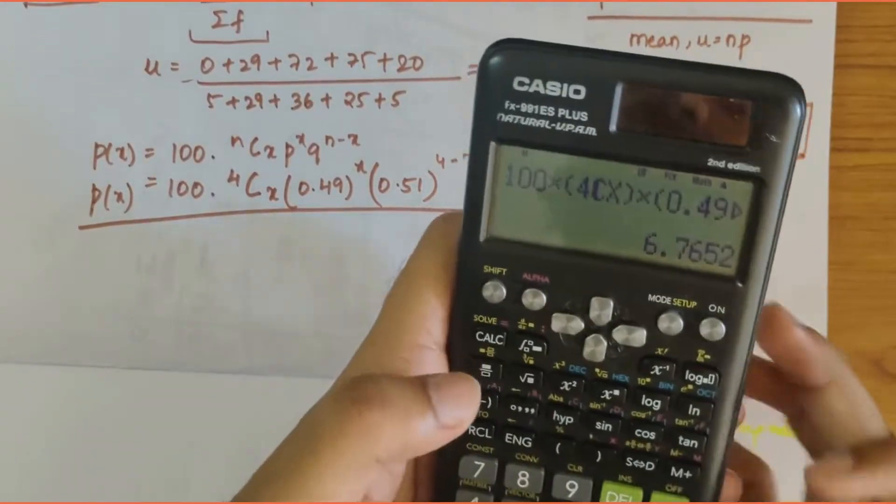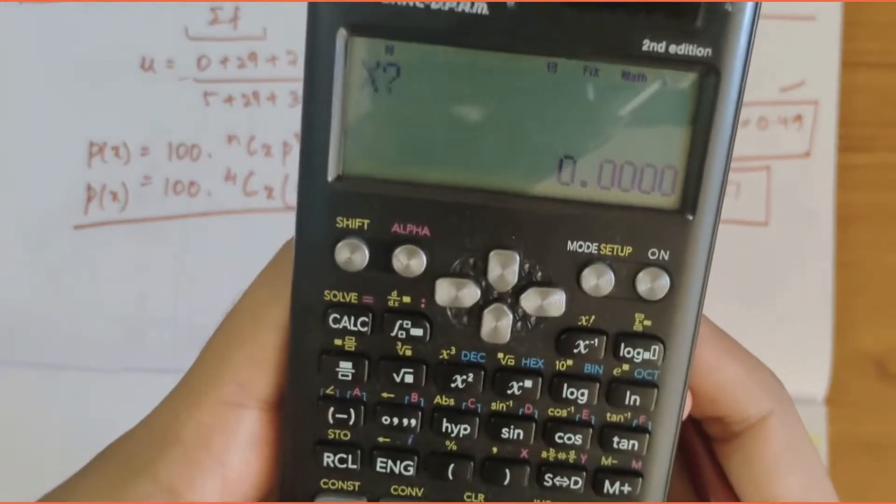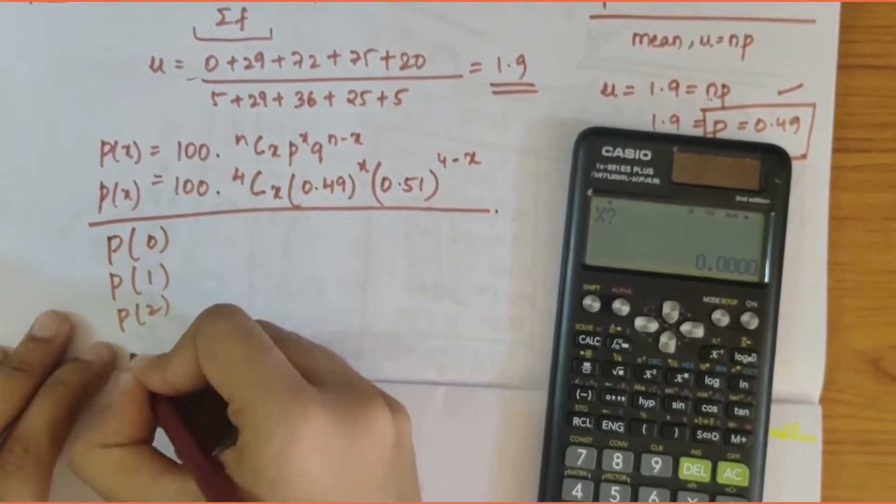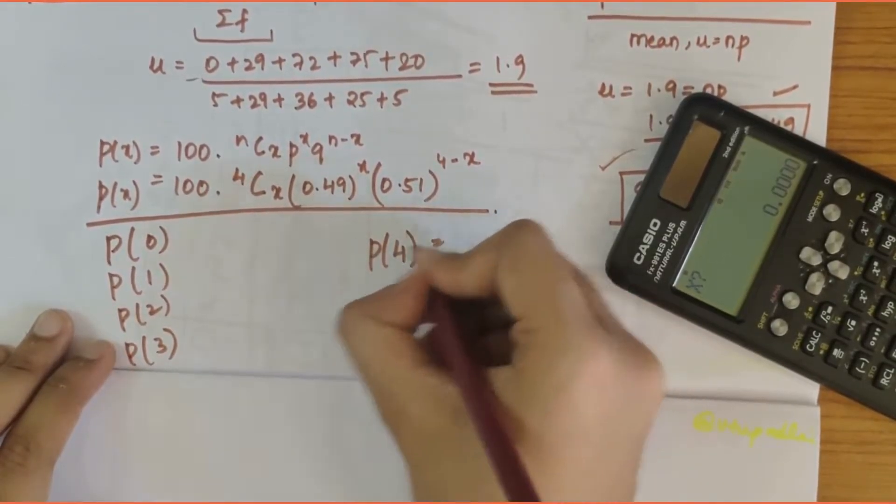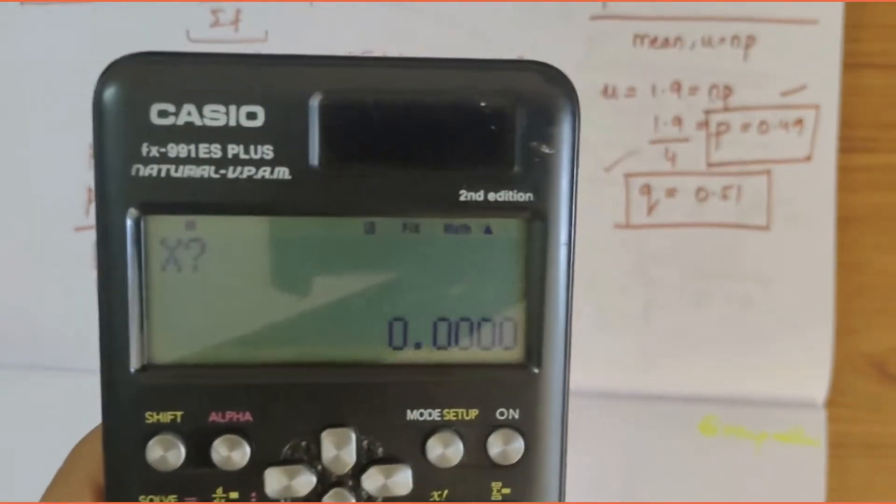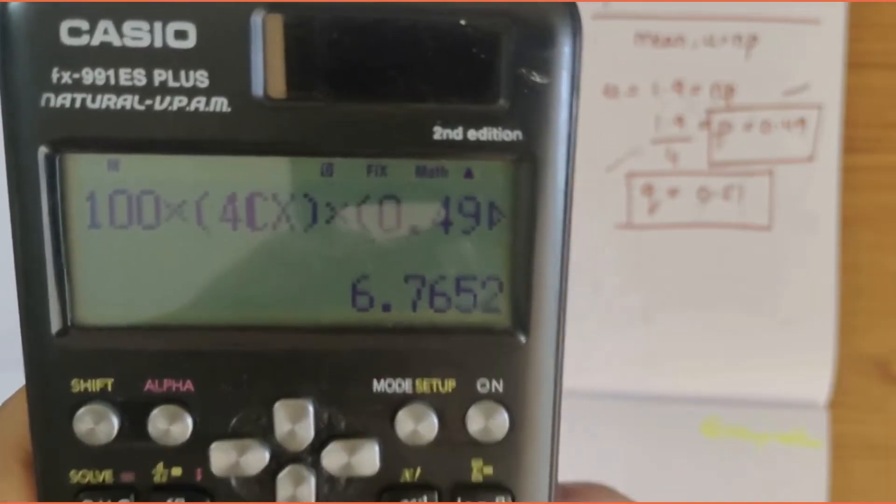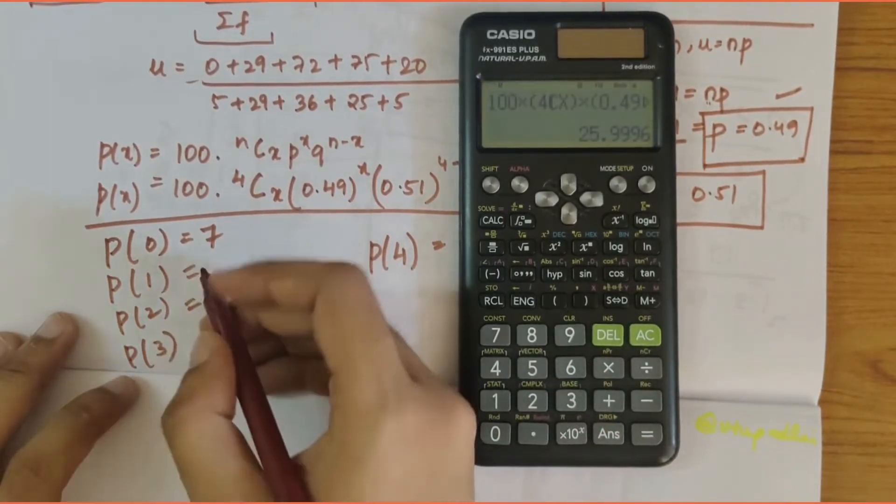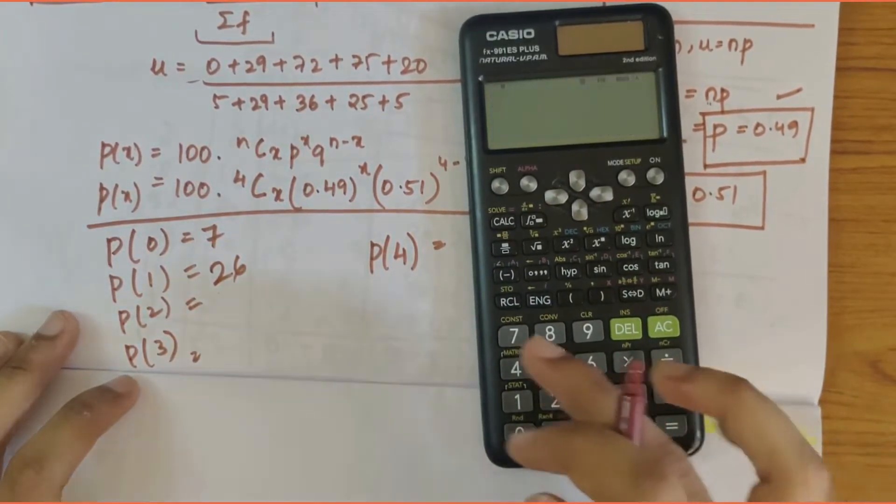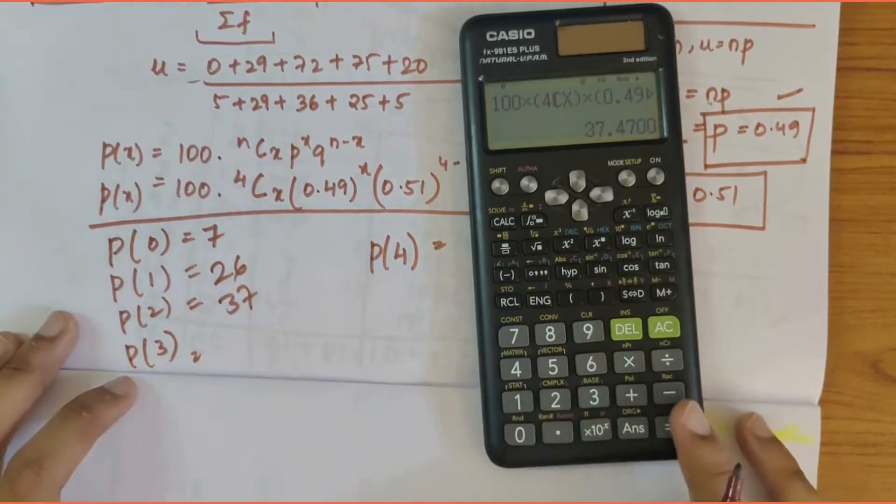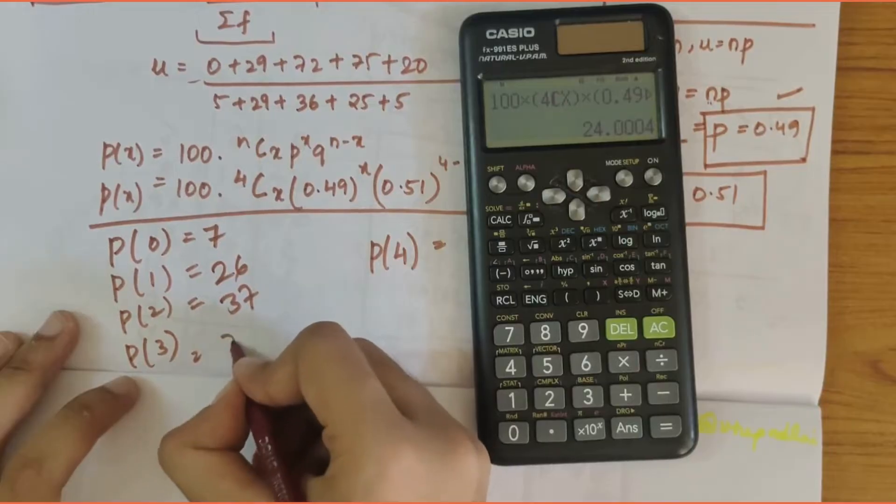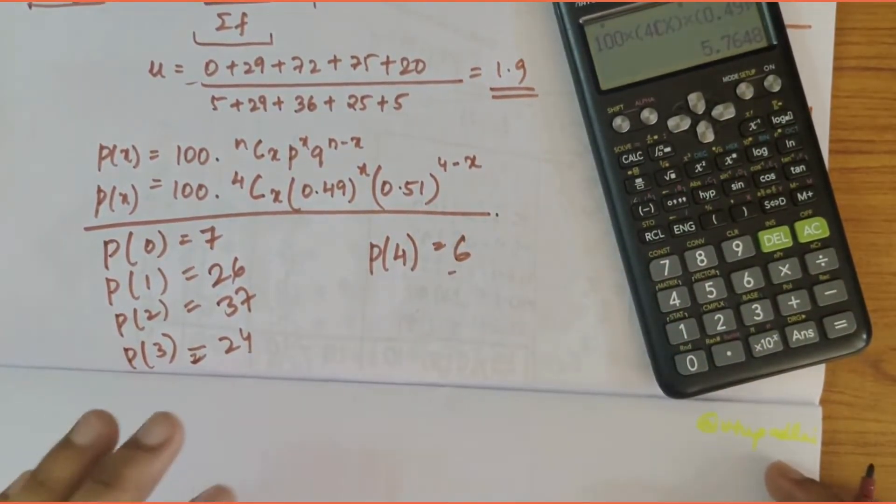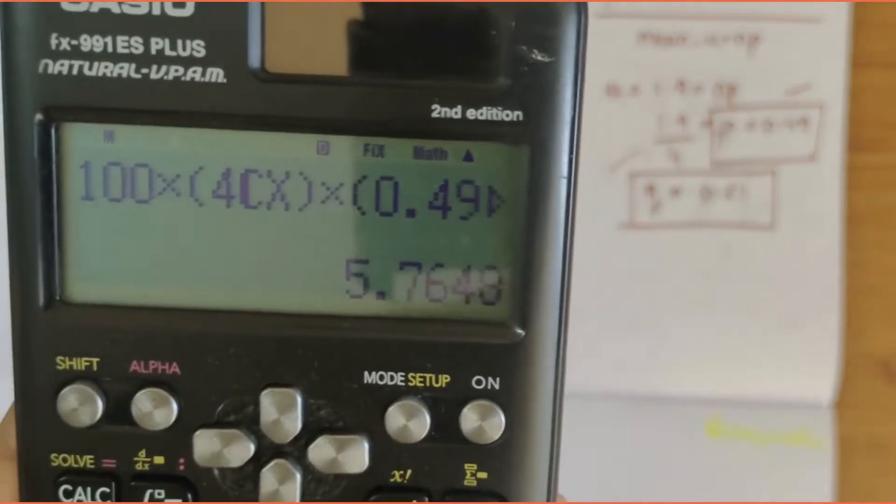Now I will solve it. First let's write the values: p of 0, p of 1, p of 2, p of 3, and p of 4. When we put value 0 we get 6.77 which rounds to 7. When we enter 1 we get 26. For 2 we get 37.47 which is 37. For 3 we get 24, and for 4 we get 5.76 approximately 6.